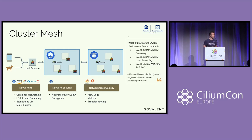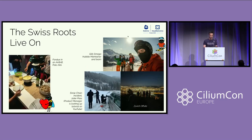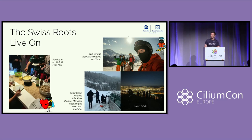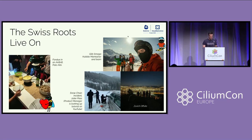We also added a standalone load balancer that can sit outside of Cilium and feed traffic into a cluster. Our Swiss roots always lived on — you see a fondue we did in Palo Alto at an Airbnb. You also see Glib, one of the Hubble maintainers, skiing. And there was the famous snow chain incident on the Julier Pass: two engineers tried to mount snow chains without reading the manual, one recorded the video, and the product manager looked up the tutorial on YouTube.